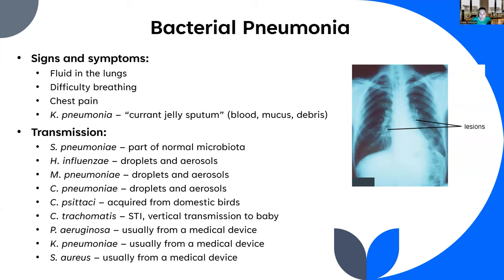Haemophilus influenzae, Mycoplasma pneumoniae, and Chlamydophila pneumoniae come from droplets and aerosols — you inhale those. Chlamydophila psittaci comes from domestic birds — if you own birds, work on a poultry farm, or have chickens, this is something you can actually get. That's important information to tell the doctor. For example, 'I own four parrots' or 'I'm a chicken farmer' — the doctor needs to know.